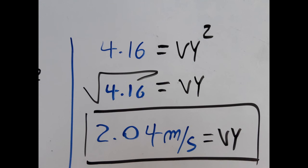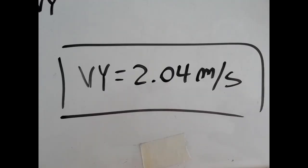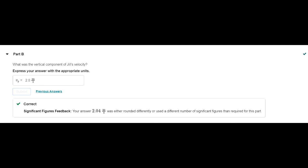We take the square root at both sides and we get that by is going to be 2.04 meters per second. So we actually get plus or minus 2.04 meters per second but we choose the positive one because Homer is going up. He's not going down.